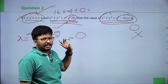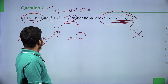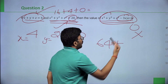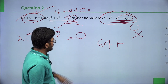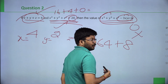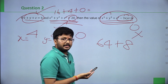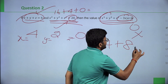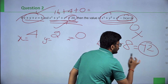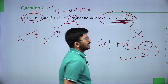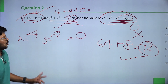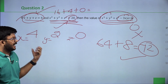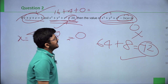So x cube plus y cube plus z cube: 4 cube is 64, 2 cube is 8, 0 cube is 0. So 64 plus 8 is 72. Since 3xyz is 0, x cube plus y cube plus z cube minus 3xyz equals 72. The answer to this question is 72.